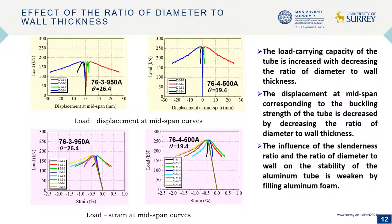When decreasing the ratio of diameter to wall thickness, the load carrying capacity of the tube is increased, and the displacement at mid-span corresponding to the buckling strength of the tube is decreased.